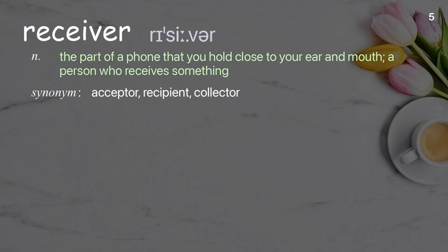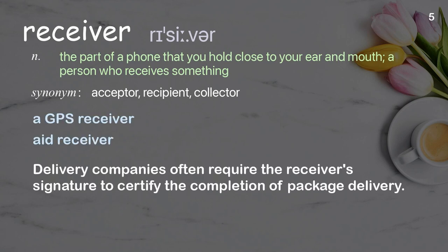Receiver: The part of a phone that you hold close to your ear and mouth; a person who receives something. Examples: A GPS receiver. Aid receiver. Delivery companies often require the receiver's signature to certify the completion of package delivery.